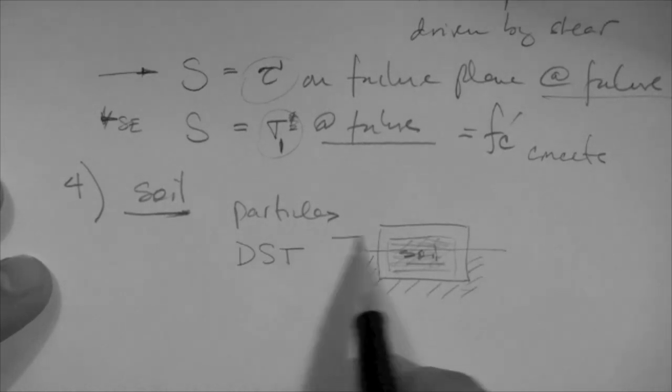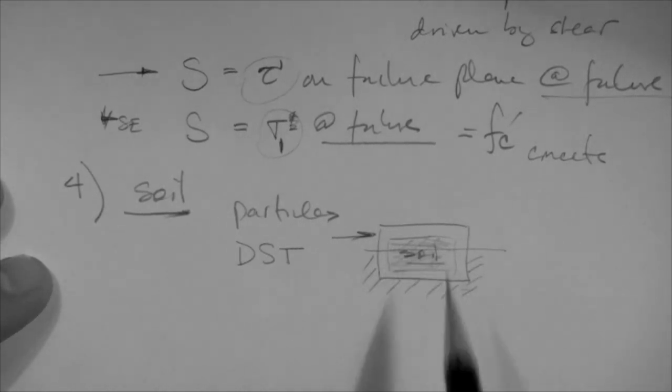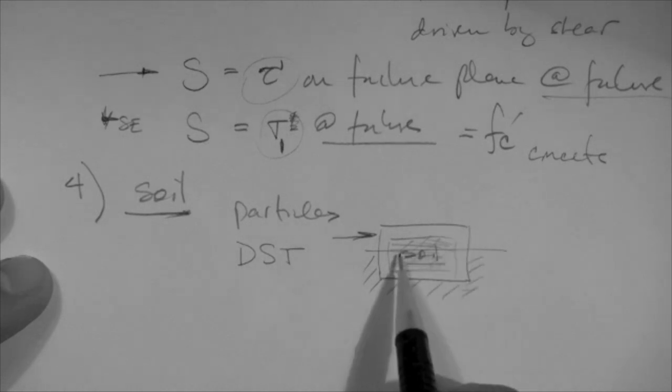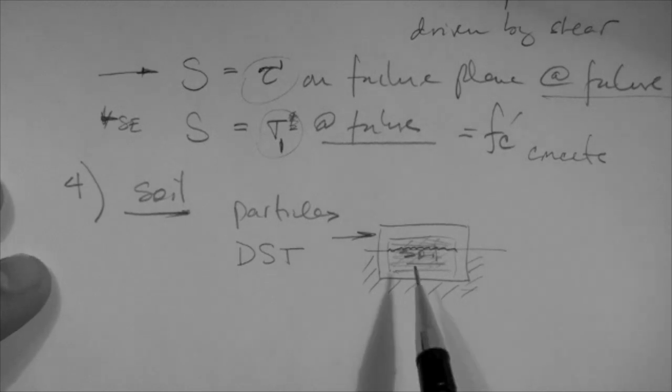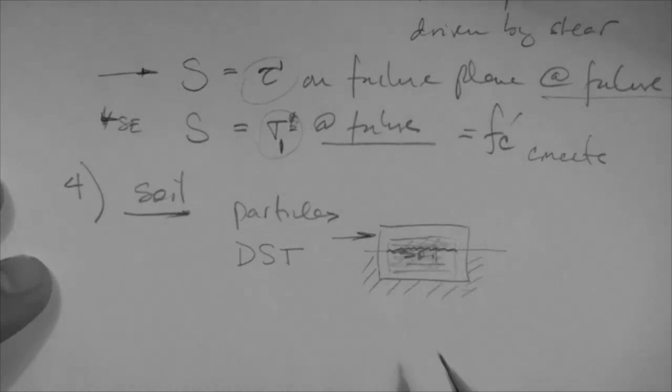We fix the bottom, and then we push or pull on the top. And we create a failure plane that is horizontal to the floor, because it essentially looks like this.